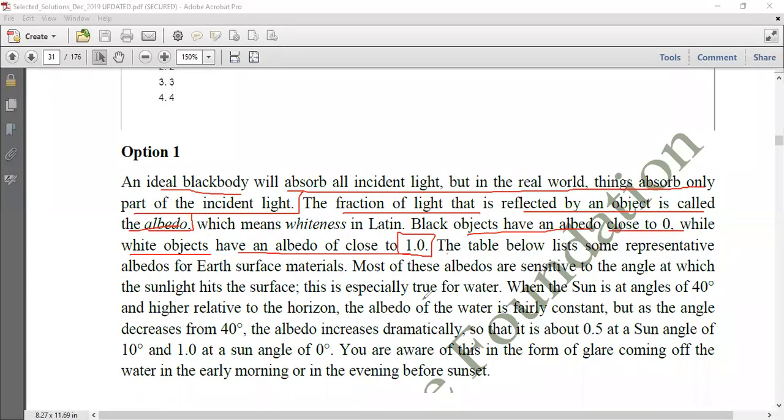We have a table where we have shown what is basically the albedo of different things. Albedo of the earth's surface materials and most of the albedos are sensitive to the angle at which the sunlight hits the surface. And this is especially true for water.